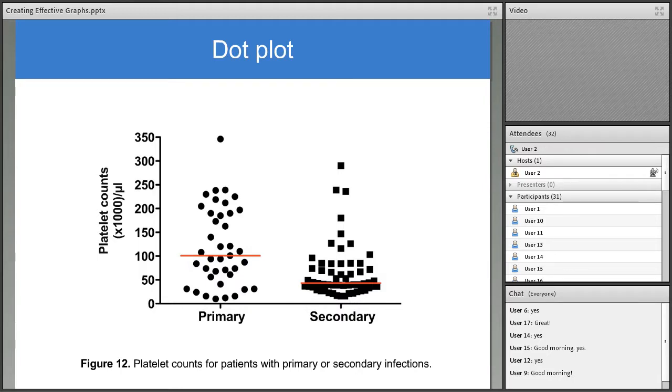A dot plot, also known as a dot graph or point graph, is useful if you have a quantitative variable and a categorical variable and want to show individual values. This plot shows platelet counts for patients with primary or secondary dengue infections. We have the quantitative variable on the y-axis, platelet counts, and a categorical variable, primary versus secondary infection, on the x-axis. The authors could have presented bars summarizing median platelet counts, but instead, the platelet counts for each patient have been plotted. Median values are marked by the red lines, and the published legend did mention that. I shortened the legend for this slide. By seeing the individual data points, we can see that the distribution patterns for primary versus secondary infection were quite different.